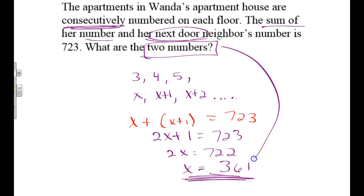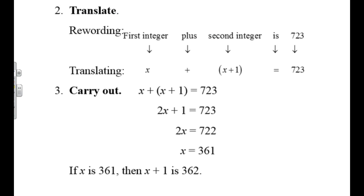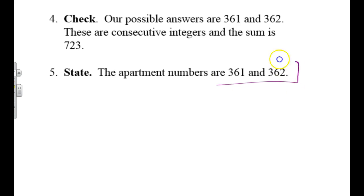It says, what are the two numbers? And you only have one number. So again, to answer the questions, I need to either put units or I might have to come up with another number. In this case, 361 and 362 are the two consecutive numbers. And so the final solution looks like the apartment numbers are 361, 362.